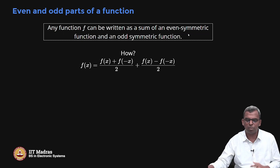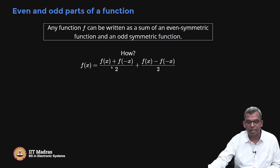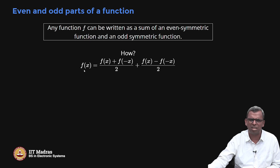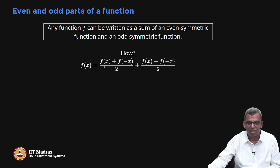Actually it is very, very simple how to do it. You can write f(x) as [f(x) + f(−x)]/2 plus [f(x) − f(−x)]/2. If you see here, the f(−x) and minus f(−x) will cancel and you will get f(x) + f(x) = 2, so f(x)/2 becomes f(x) — the same thing. I am just rewriting it by introducing some trick.